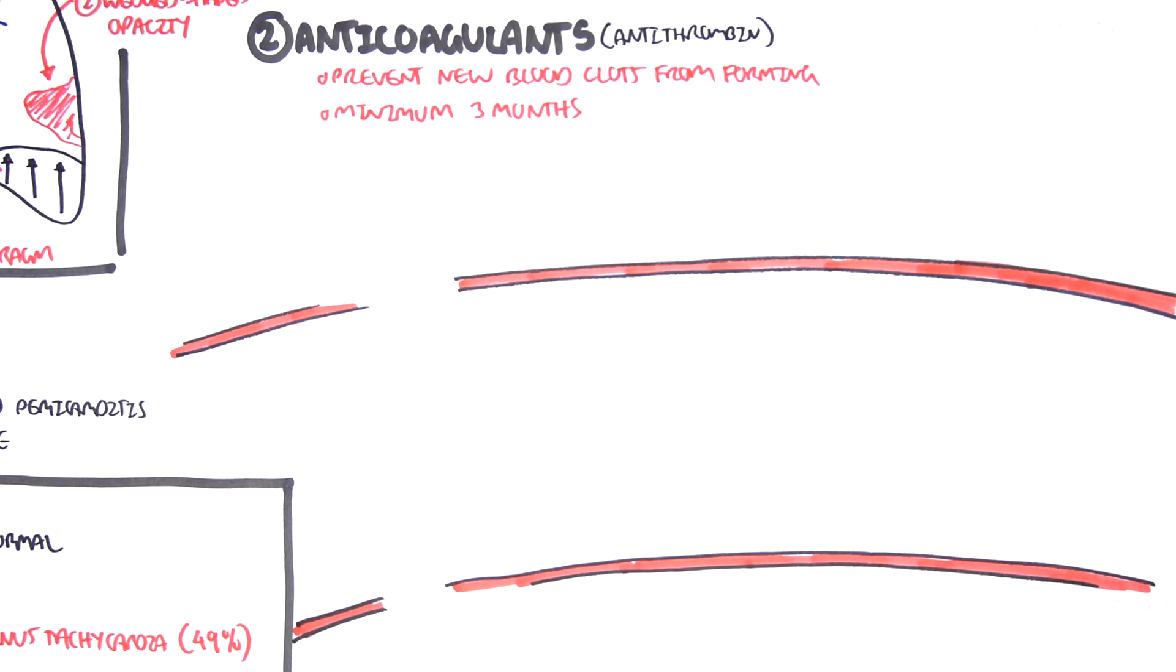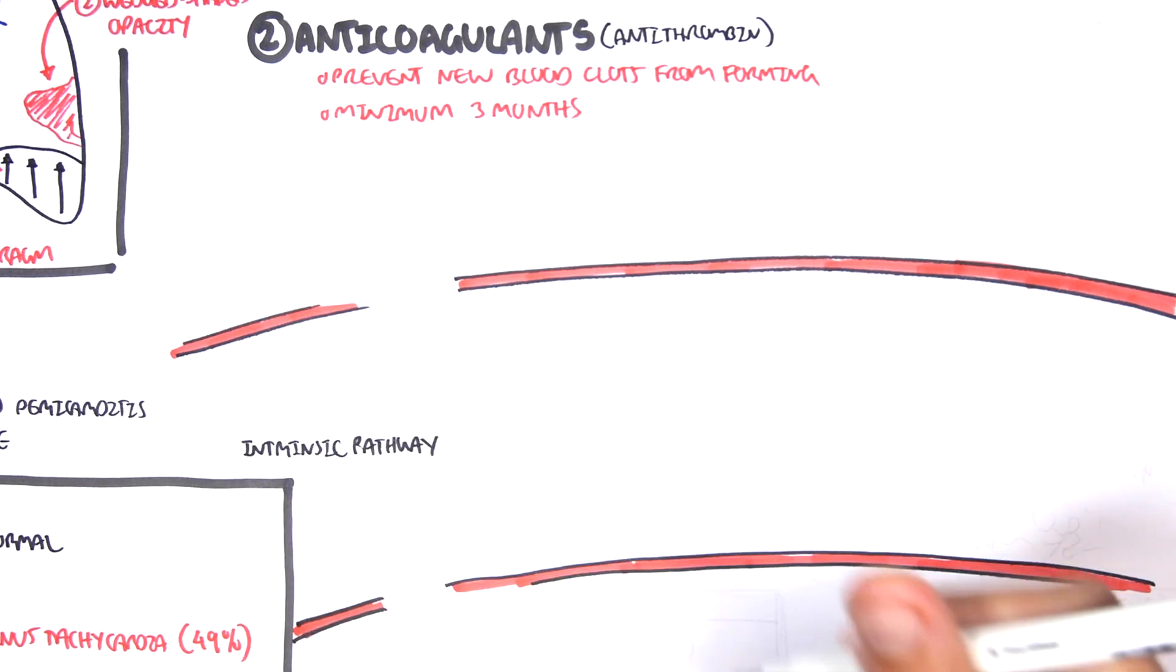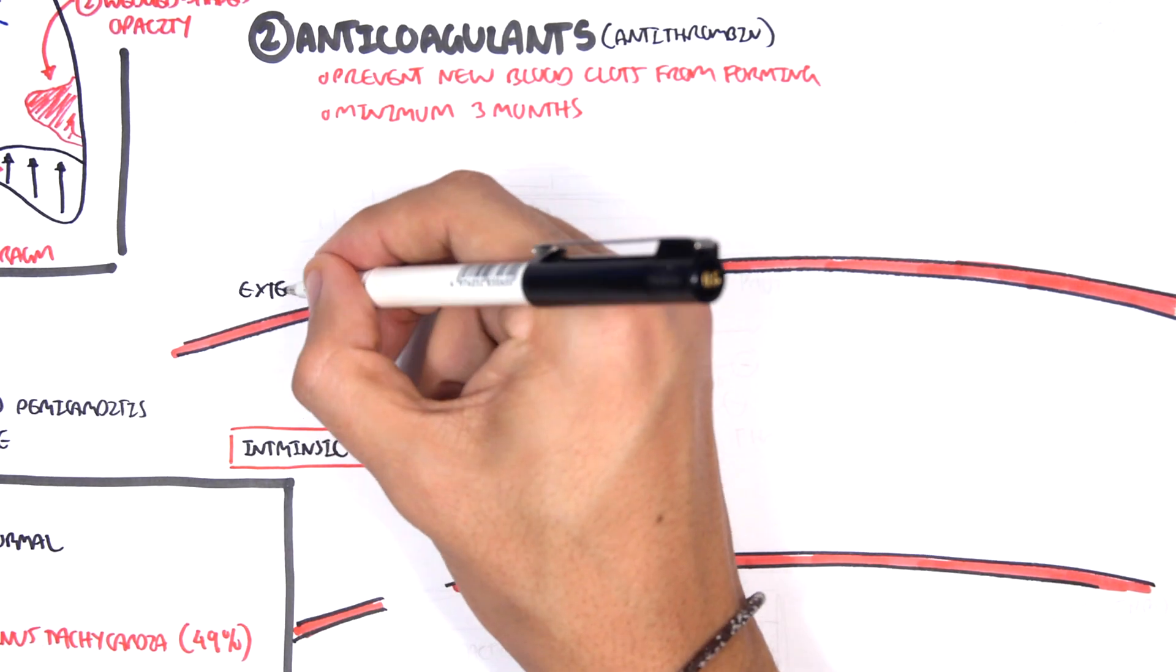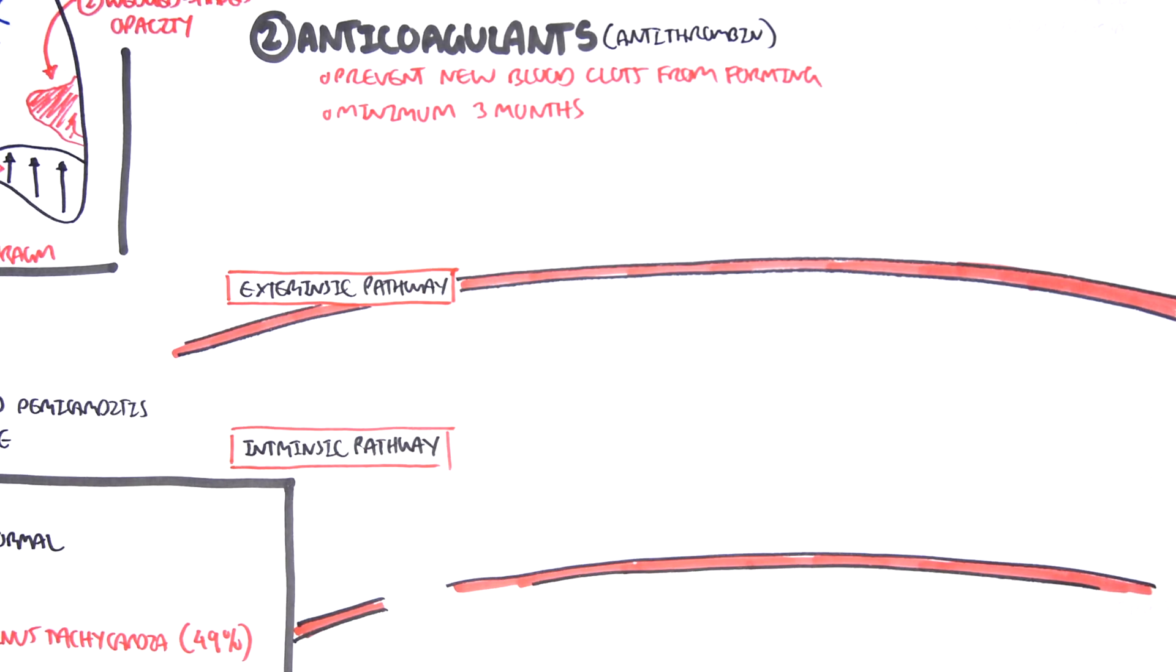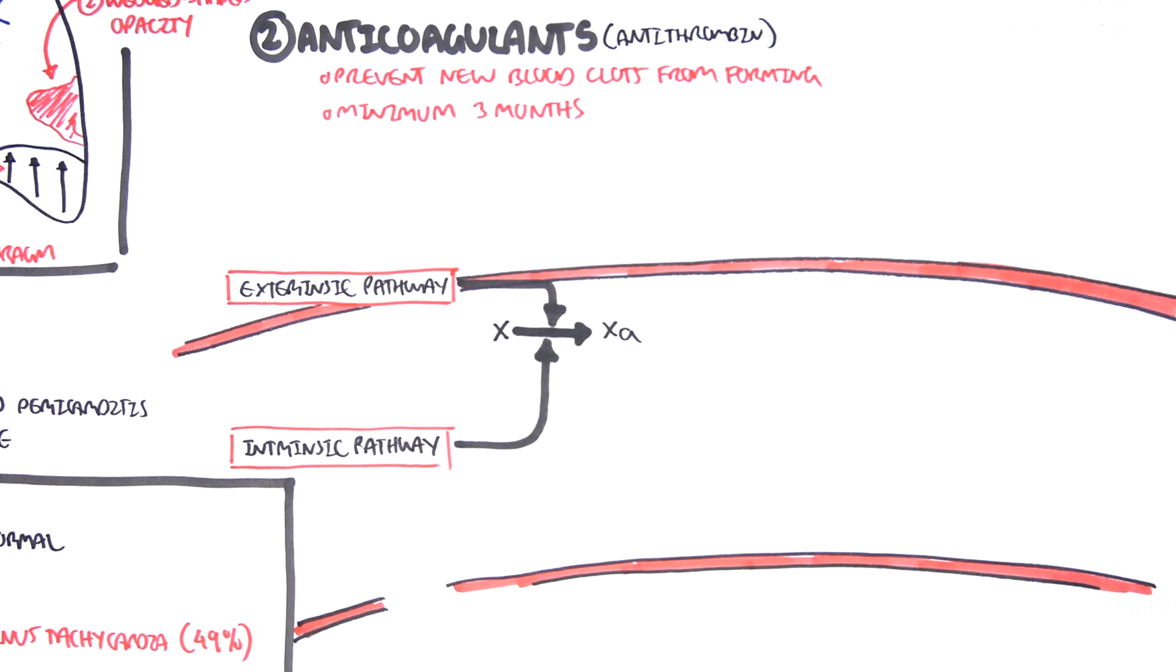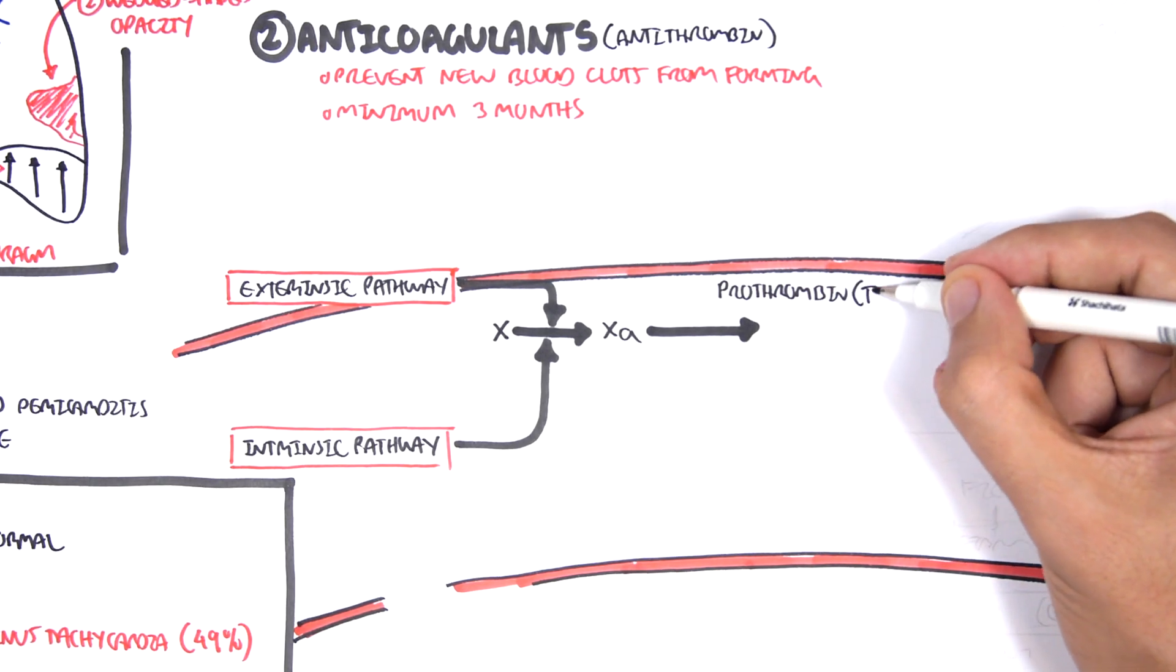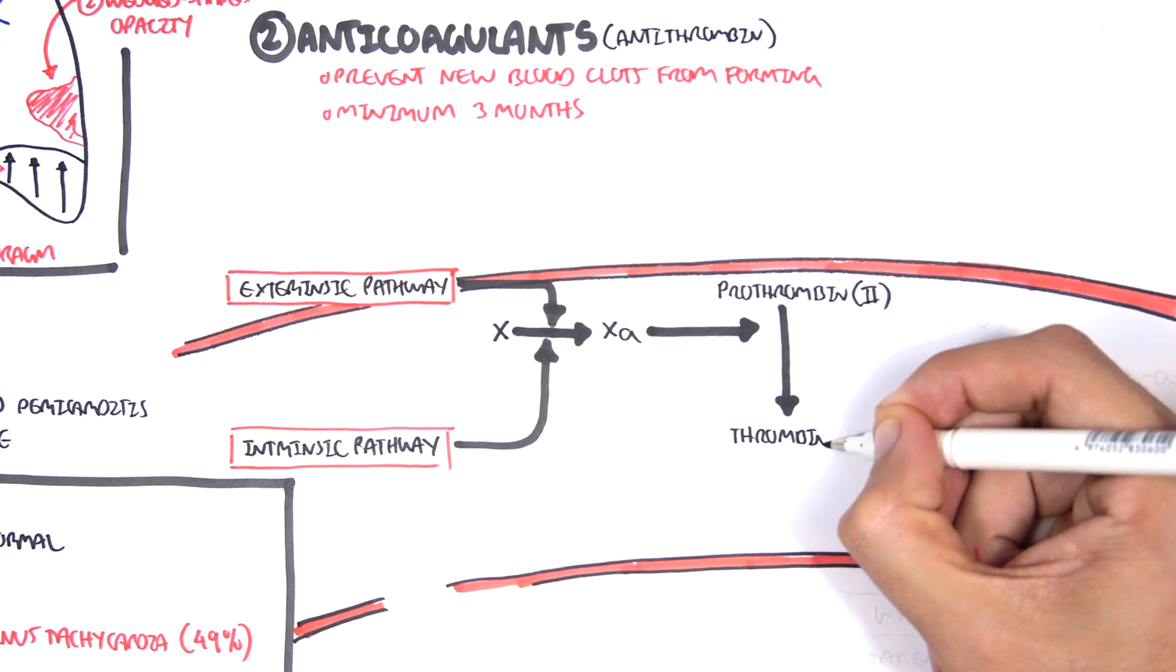Here I'm drawing a blood vessel. The coagulation cascade can begin either from an intrinsic pathway from inside within or from an extrinsic pathway when there's a damaged tissue. Either way, the intrinsic and extrinsic pathway will lead to a common pathway which will help convert clotting factor 10 to 10a. 10a then will convert prothrombin which is clotting factor 2 to thrombin, clotting factor 2a.